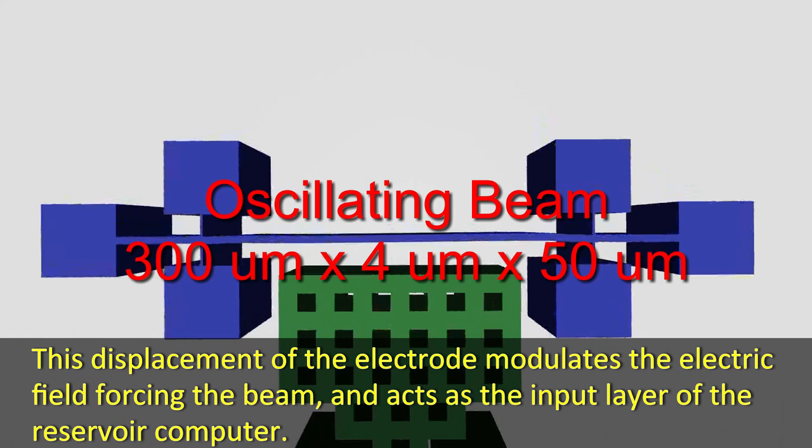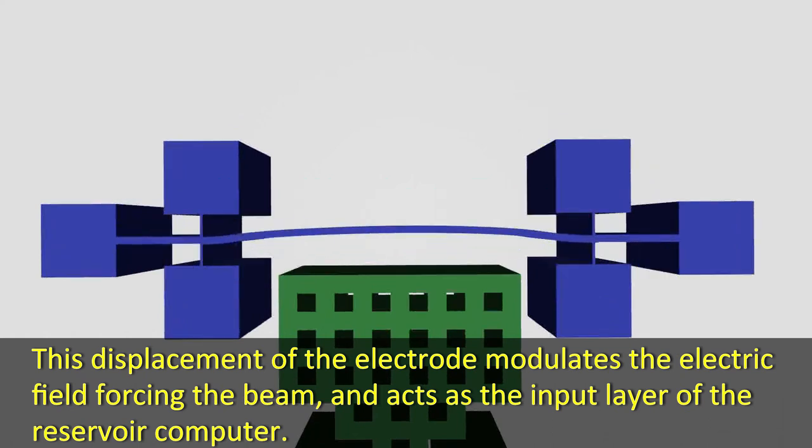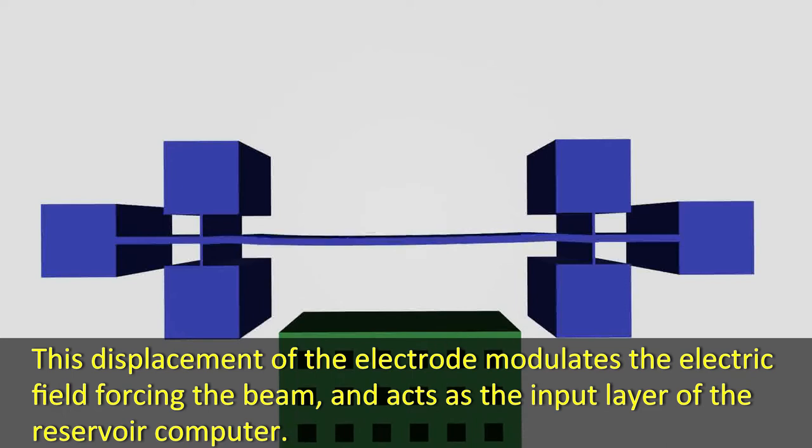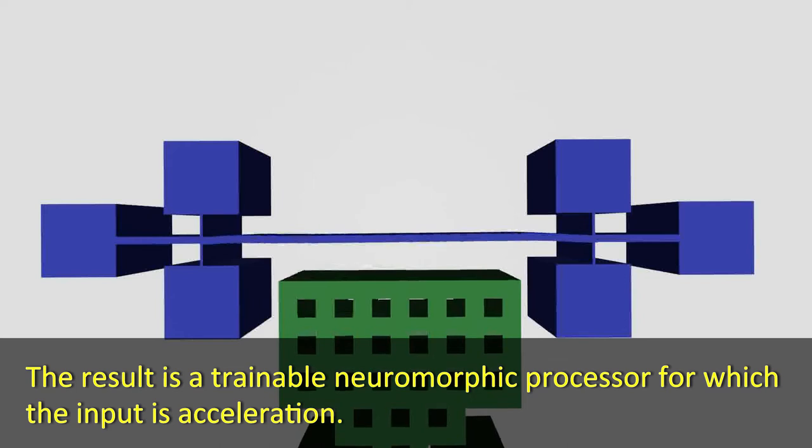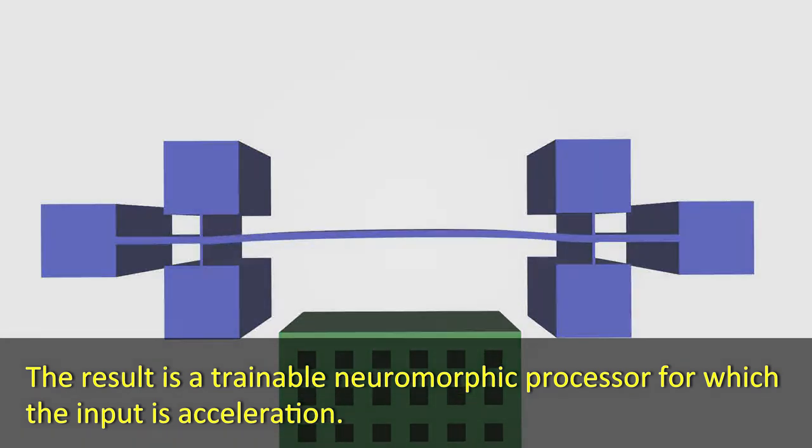This displacement of the electrode modulates the electric field forcing the beam and acts as the input layer of the reservoir computer. The result is a trainable neuromorphic processor for which the input is acceleration.